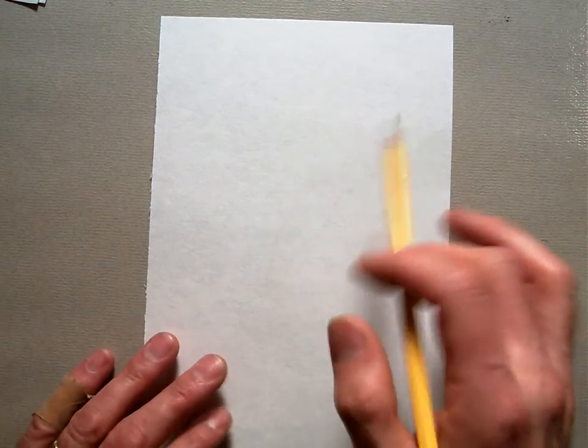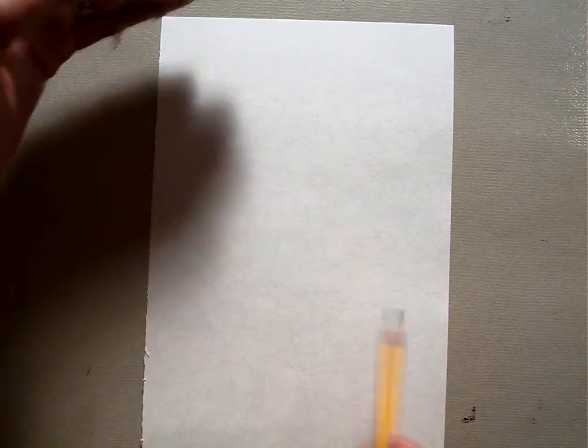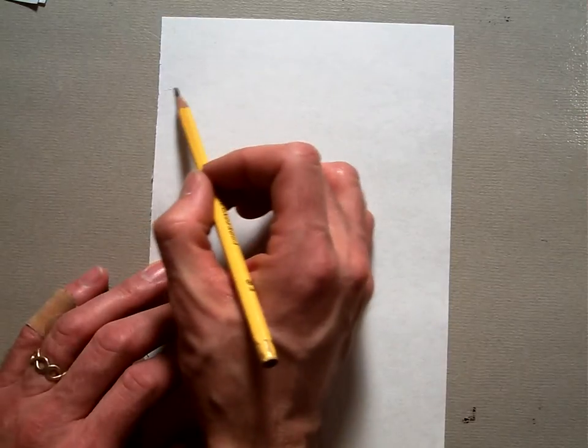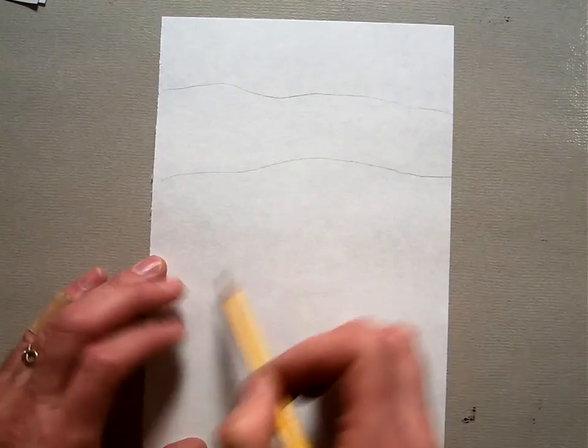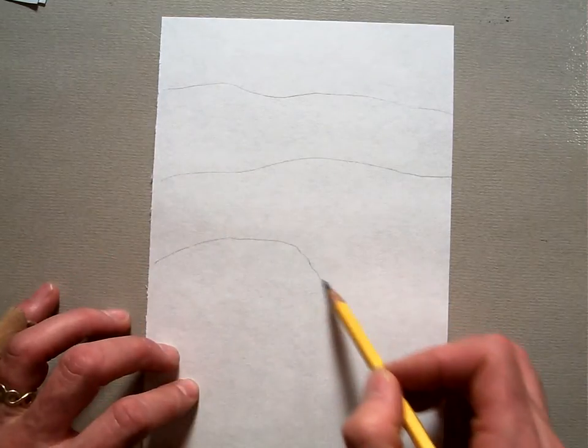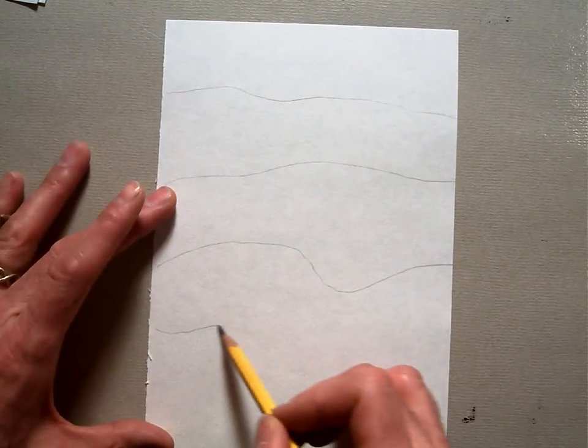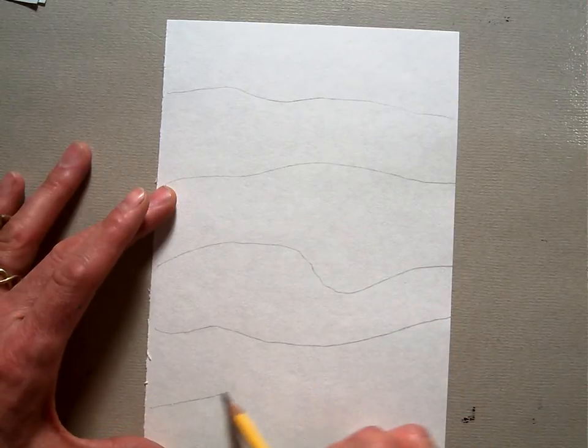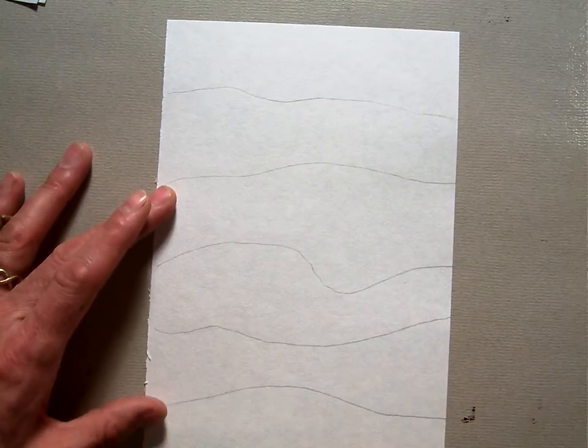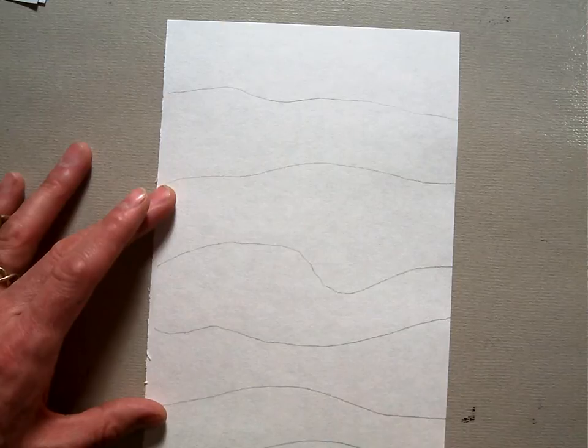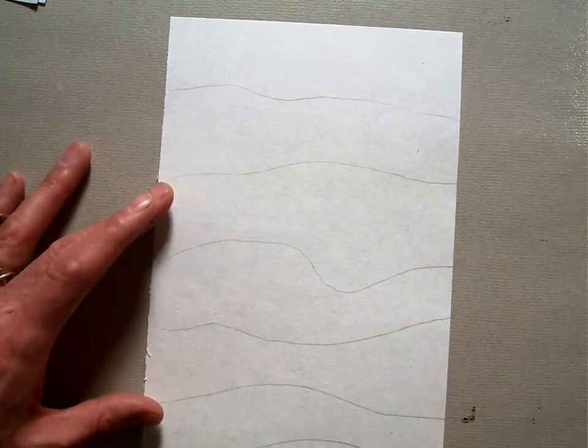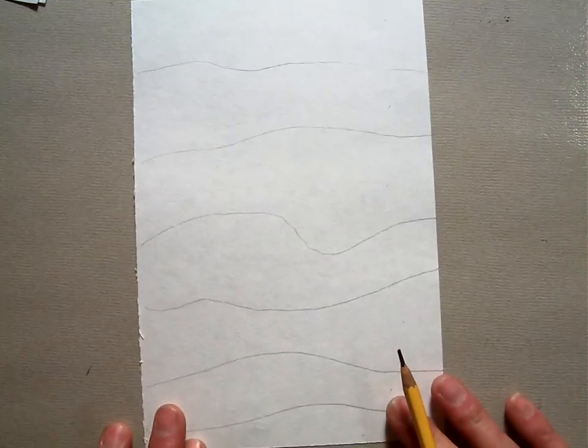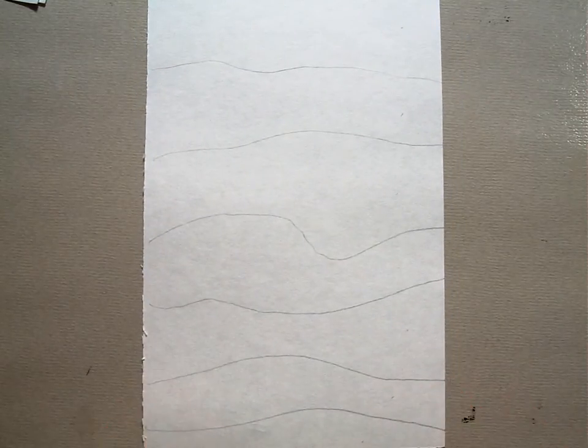I flip it over and you're going to first things first, lightly with your pencil kind of delineate seven different spaces. One, two, three, four, five, six lines to have one, two, three, four, five, six, seven spaces. So there we go, I have my seven spaces that I've got.